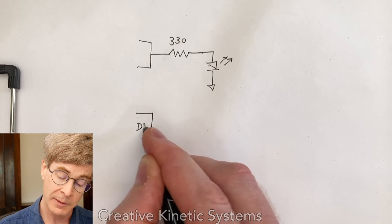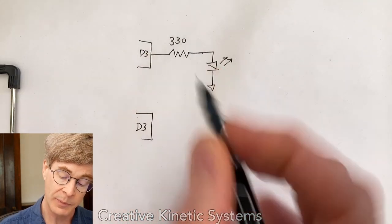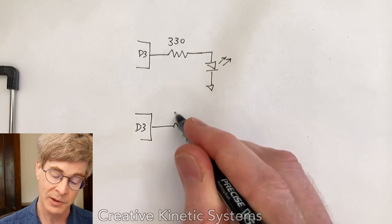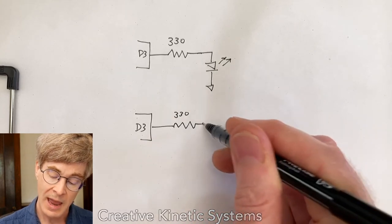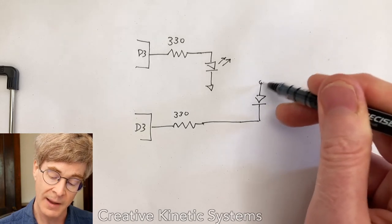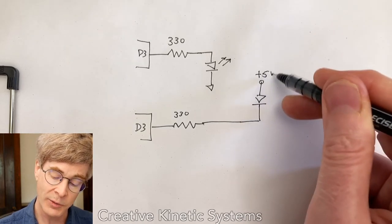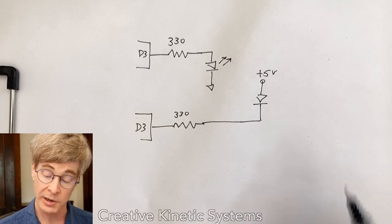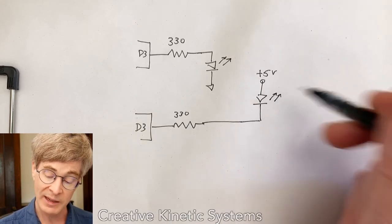So I take my output from my Arduino and I run it through my ballast resistor. And now, instead of going to ground, I wire the LED to the plus 5 supply. Note that the direction of the LED is still pointing in the direction of the current for this to work. But now I have what we might think of as inverse logic.